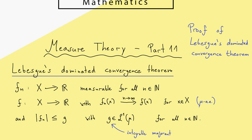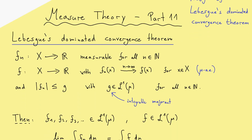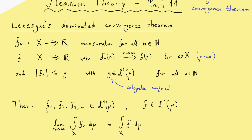From these assumptions we can conclude that all the functions in the sequence are also integrable, and moreover the mu-almost-everywhere pointwise limit function f is also integrable. From this we can conclude that all these integrals make sense. The equality tells us that we can pull the limit into the integral, and that is the reason we call it a convergence theorem.